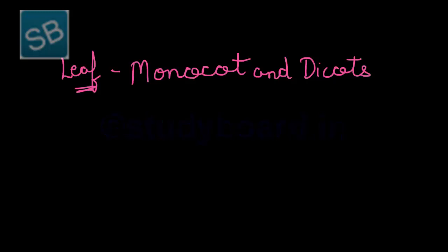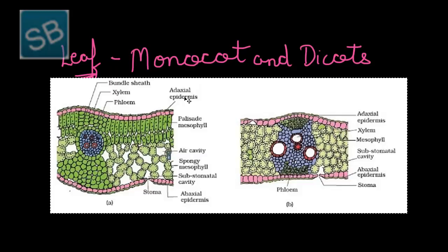We have already studied about the anatomy of monocots and dicots of two important regions, that is stem and root. Now we will study about the anatomy of the third and most important region, that is the leaf. This figure depicts the anatomy of the leaf for dicots and monocots. Here E represents the dicot leaf and B represents the monocot leaf. The section of any leaf basically comprises three important regions: the outer layer epidermis, the middle layer mesophyll, and the third layer, the vascular system, which comprises phloem and xylem.